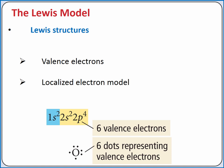It is a localized electron model, which means it assumes valence electrons are either localized on a particular atom as a lone pair of electrons, or shared between two atoms as a bond. We could draw the Lewis structure for an oxygen atom by surrounding the chemical symbol for oxygen with six dots to represent oxygen's six valence electrons.